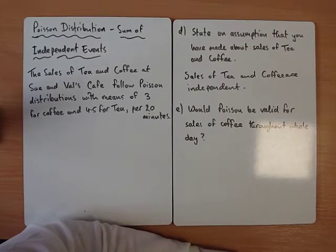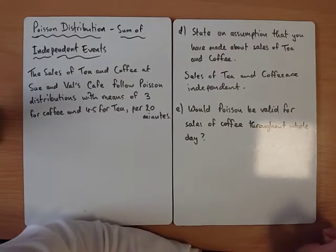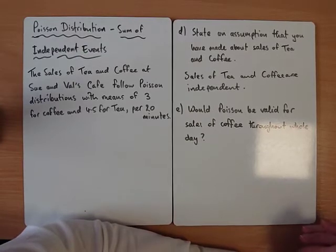Essentially, what that means is that they don't affect each other. The number of coffee sales doesn't affect the number of tea sales. Maybe in real life they wouldn't be independent, but for us to be able to answer this question, we do have to assume that they are independent.